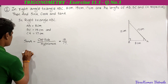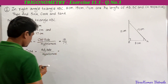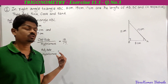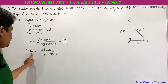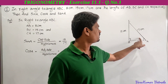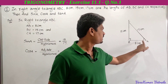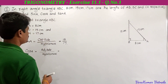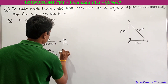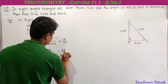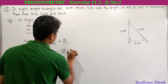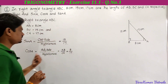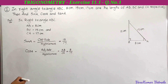Next, cos A. We know cos A equals adjacent side divided by hypotenuse. Since the angle is A, we have to select the adjacent side of angle A, which is AB. So it is AB divided by CA. AB is 8 cm and CA is 17, so cos A equals 8 by 17.